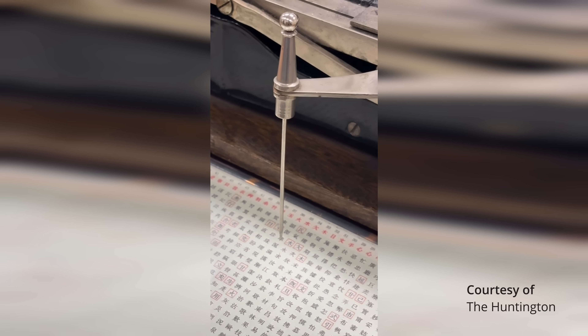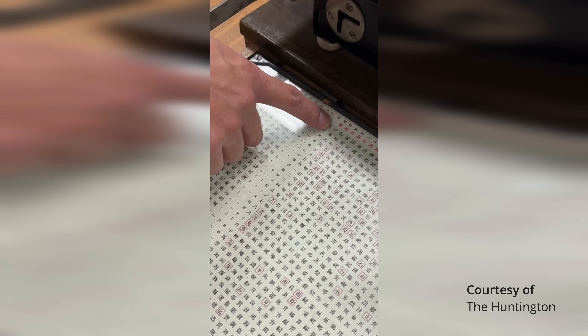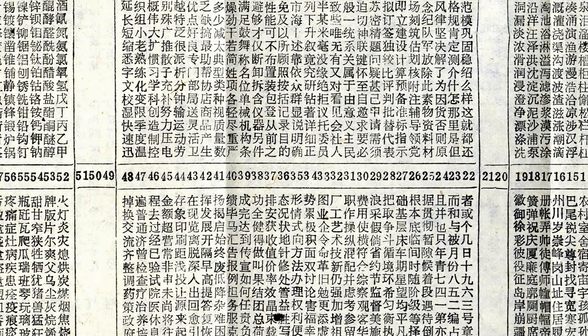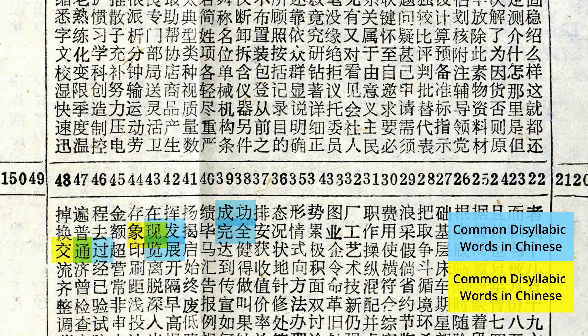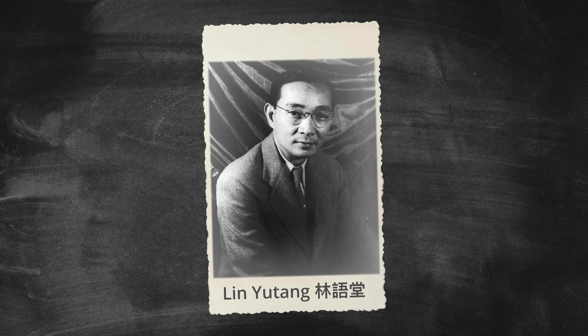Using the machine meant you had to constantly refer to a cheat sheet to figure out where each character was located. Later variations had commonly used characters placed near each other, which led to faster typing, but this was still much slower than using a QWERTY keyboard. One man felt there was a better way. Born the son of a pastor in Fujian province, Lin Yutang grew up immersed in Western classics, not Chinese ones — allowing him to view the problem of Chinese characters from both an outsider's and insider's perspective.